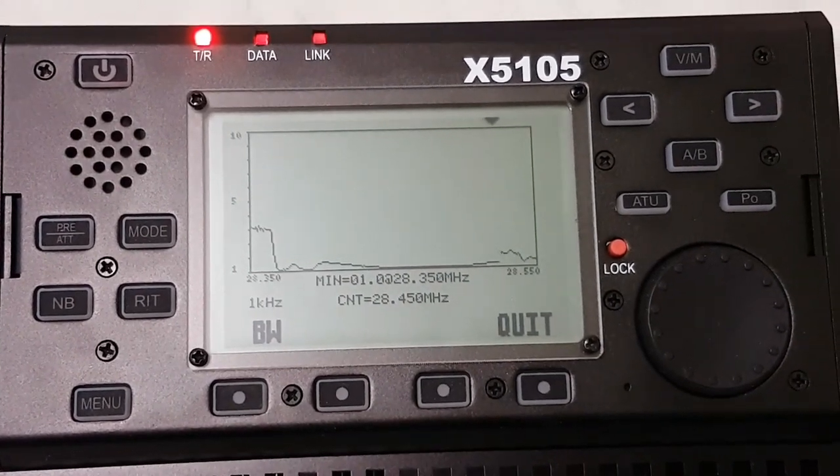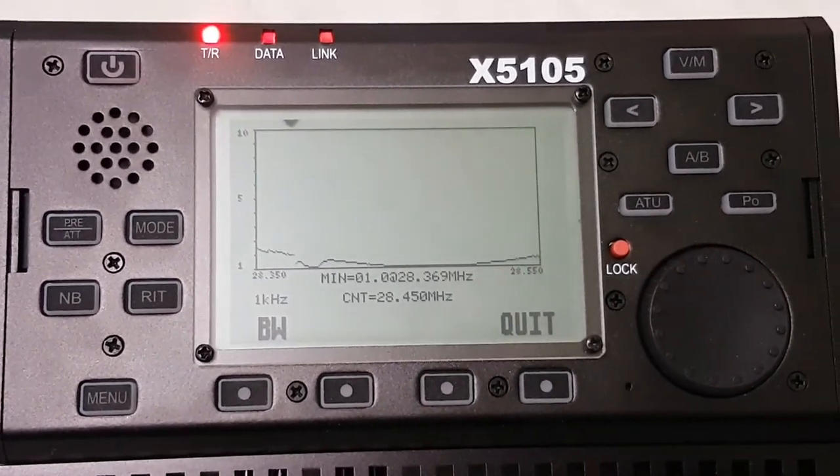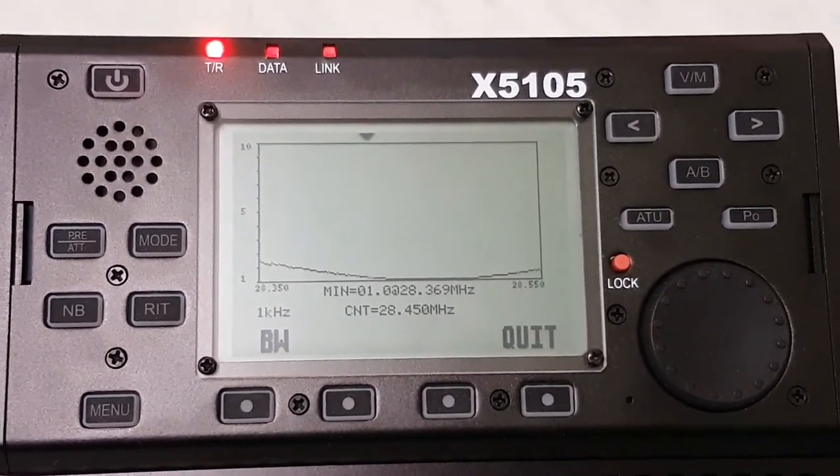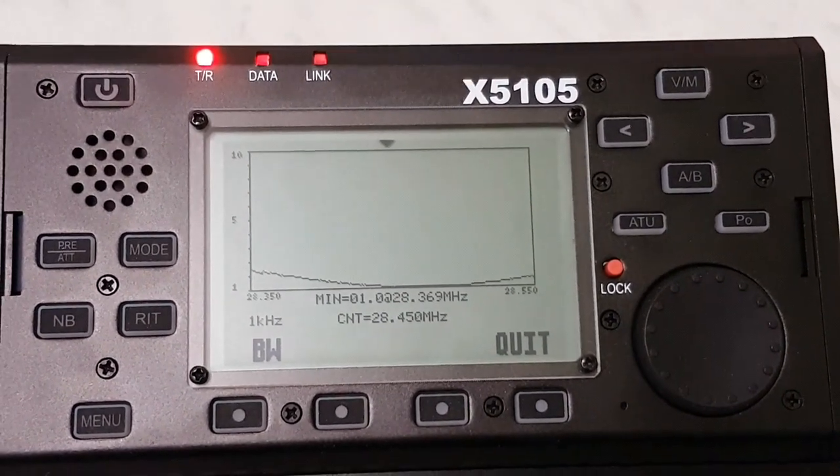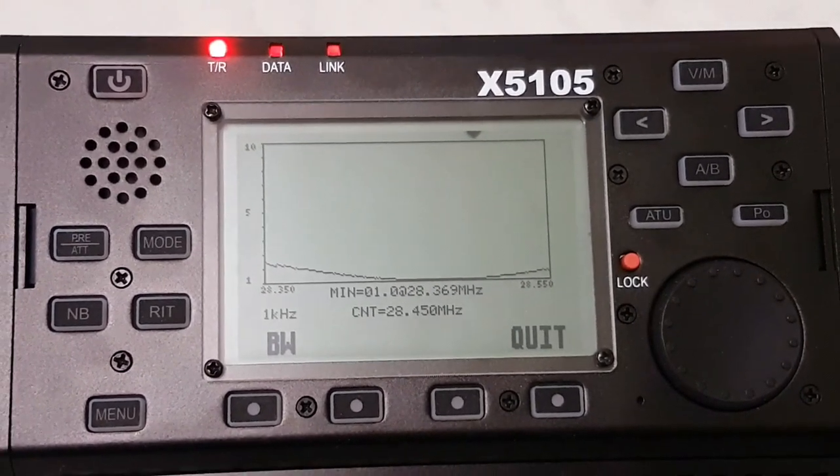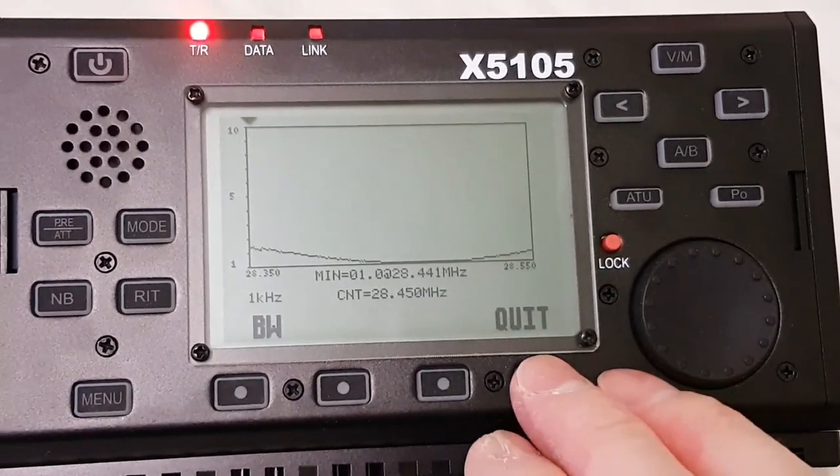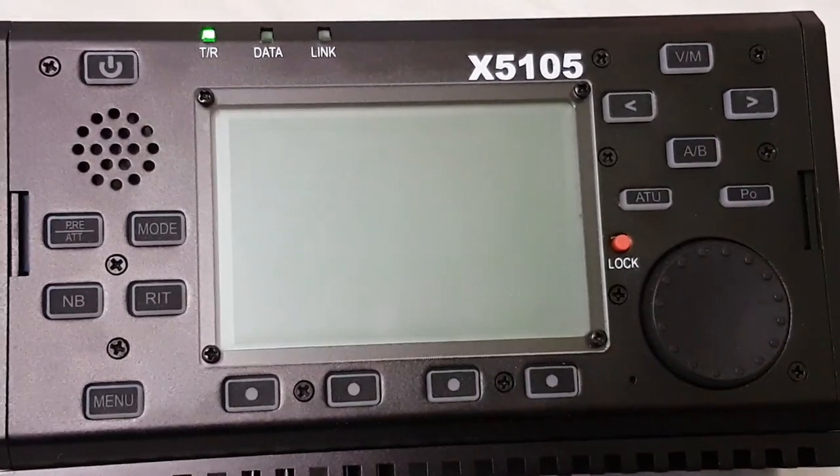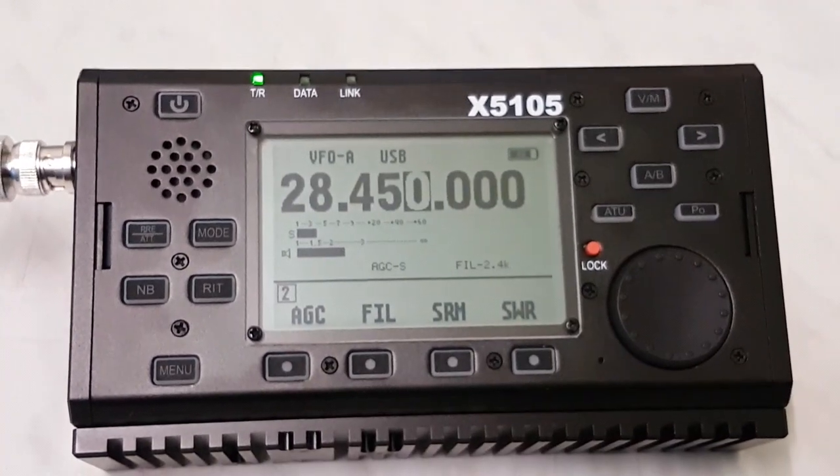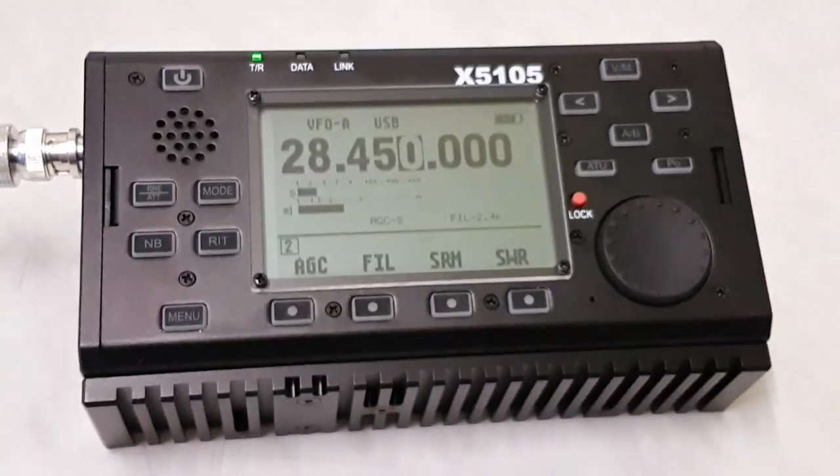So flat SWR on 10 meters, it looks really good. Yeah, the bandwidth is much better, much wider. Okay, so you can see that this antenna is working from 40 meters up to 10 meters continuously, of course, and can handle 5 watts from this transceiver.